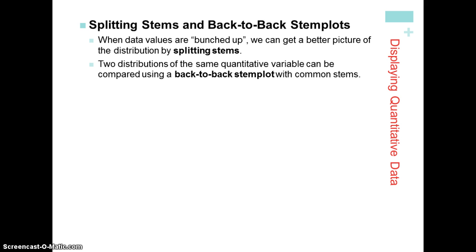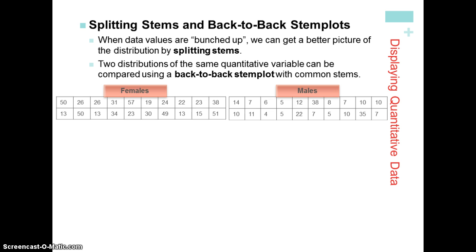Sometimes the data that we graph doesn't give us enough bars. It seems to be all bunched up. And in a case like that, what we do is we create a split stem and leaf plot or stem plot. Conversely, there are times when we're comparing two data sets and we want to create a back to back stem plot that share a common stem. If we have that same how many pairs of shoes do you own data for females and for males, split stems is going to split the zeros, the ones, the twos, the threes, the fours, and the fives, that tens digit, split it into two different lines. So zero through four on the top line, five through nine on the bottom line.